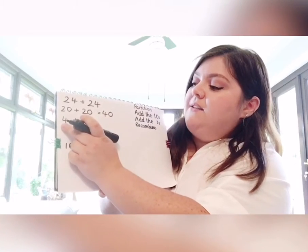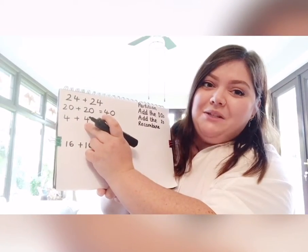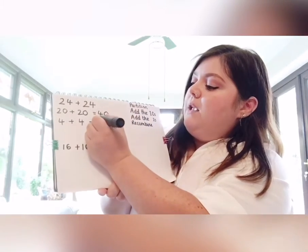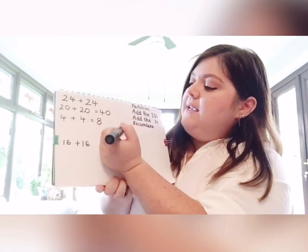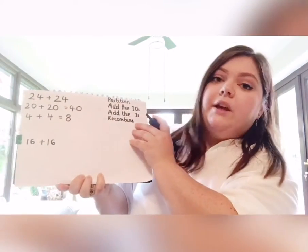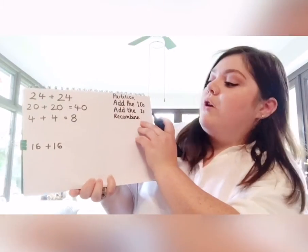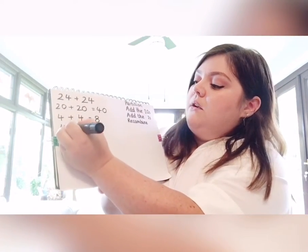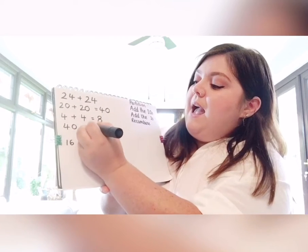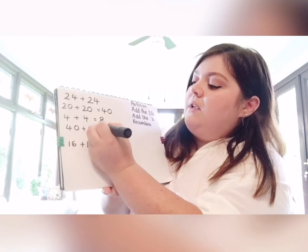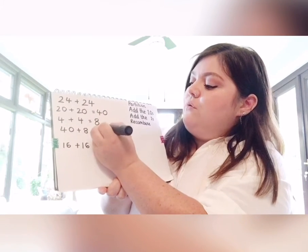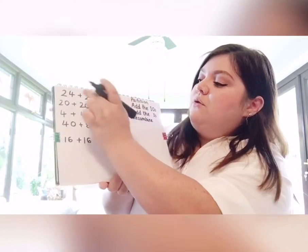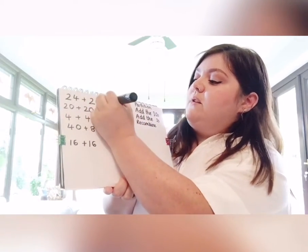And doubling four — if you can remember our doubling twins in our classroom — four add four equals eight. Then we're going to be recombining, adding all of those numbers together. So 40 add eight equals 48. So double 24 equals 48.